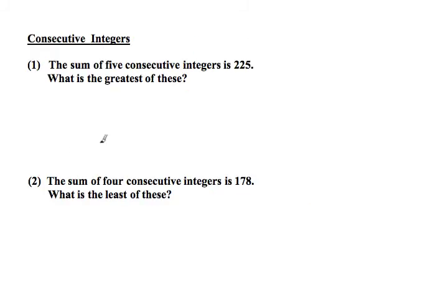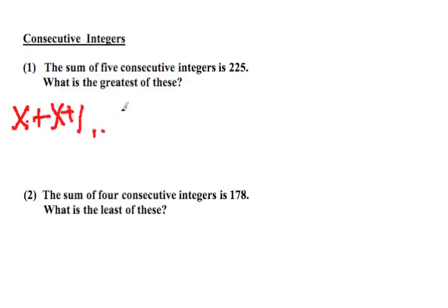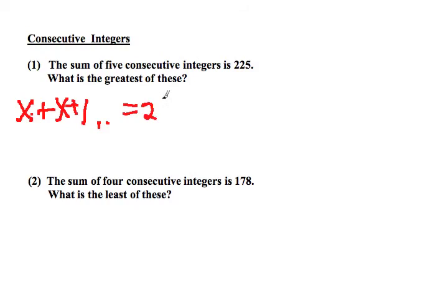Next, consecutive integers. So here, the sum of 5 consecutive integers is 225. What is the greatest of these? Well, you could do a guess and check, but one way they distinguish between low and high scores is that on easier problems, lower scores may take more time on them, so you don't have the extra time to spend on harder problems. So if you could find an easier way, that will give you more time on harder problems. But if you did this algebraically, you'd have x then plus x plus 1 plus x plus 2 plus x plus 3 plus x plus 4 equals 225. Which if you're not comfortable with algebra, it may take some time.